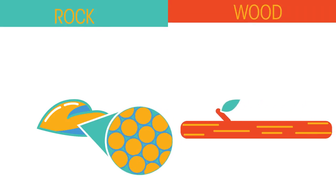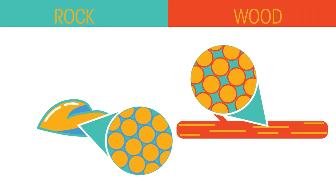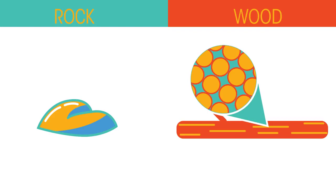How closely these atoms and molecules are packed together determines the density. In the rock, the molecules are squished tightly together, whereas in the wood they are more spread out, and in air much more spread out.